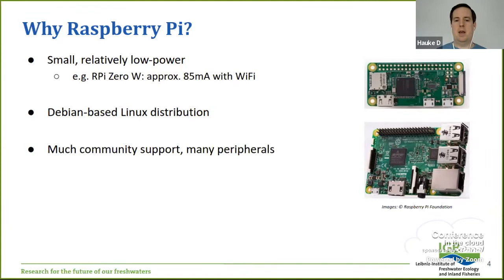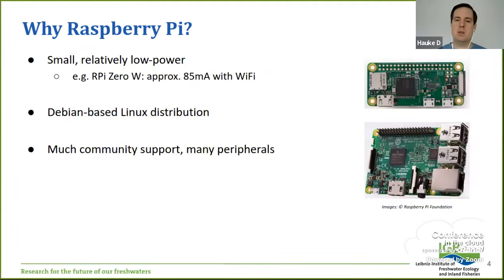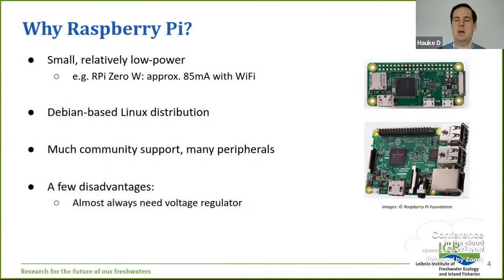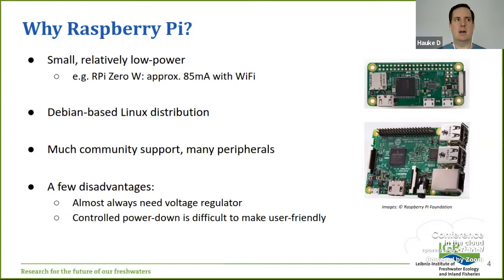The community around Raspberry Pi is relatively large, with really good support — if you have any trouble, there's usually already a forum post about it, and there are a lot of companies selling peripherals. With other similar single-board computers there are lots out there, but you just don't get this large community of support. Of course nothing's perfect — Raspberry Pis always need a fixed five-volt input, and since we do a lot of battery-powered work we almost always need to add a voltage regulator. Also, making power-down user-friendly is not as easy, because the Raspberry Pi can't turn itself off like a regular PC when it's done shutting down.